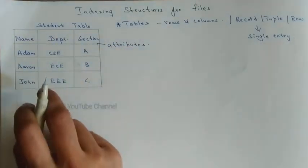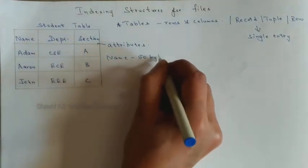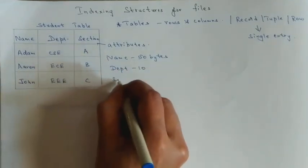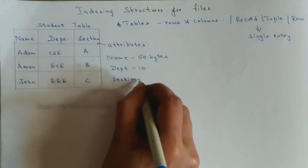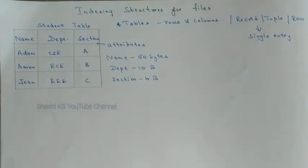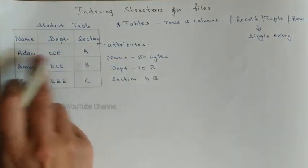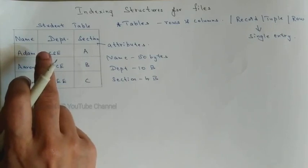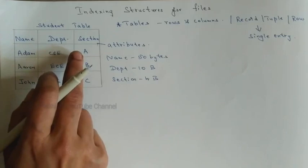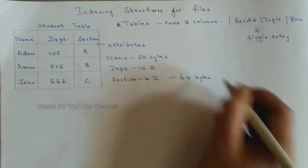The name attribute requires 50 bytes, the department attribute requires 10 bytes, and the section attribute requires 4 bytes. So each record in the table will take 64 bytes — that is 50 plus 10 plus 4. For storing one record of this table, 64 bytes are needed.